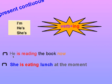He is the subject pronoun; is is the verb to be; reading is the verb read with ing added. He is reading — he is reading the book. Another example: She is eating lunch at the moment. At the moment is also a keyword, like now — they give the same meaning.